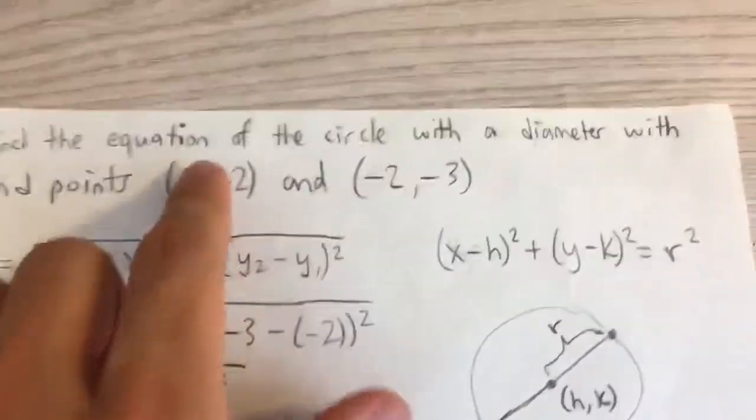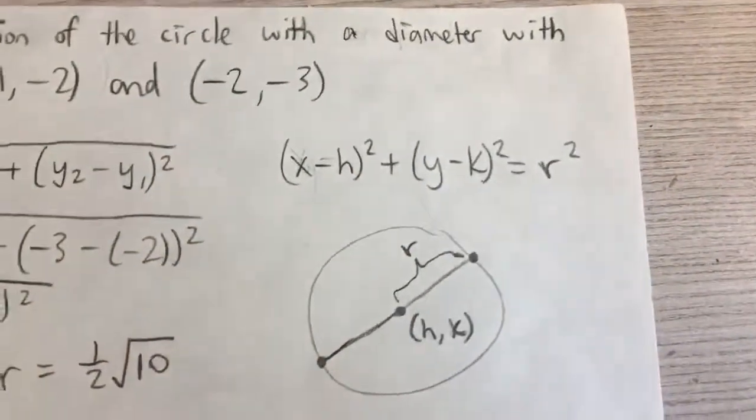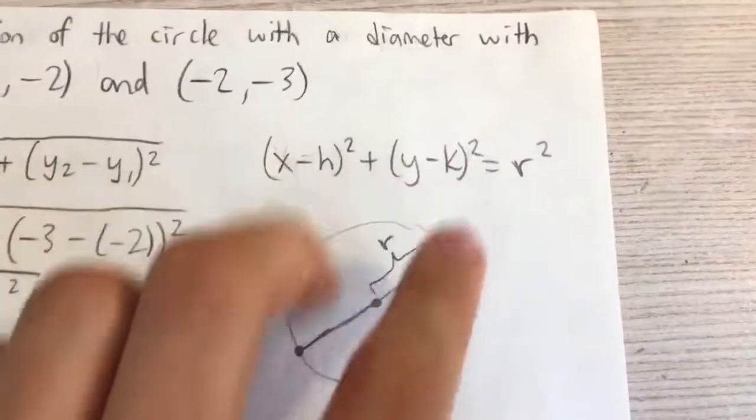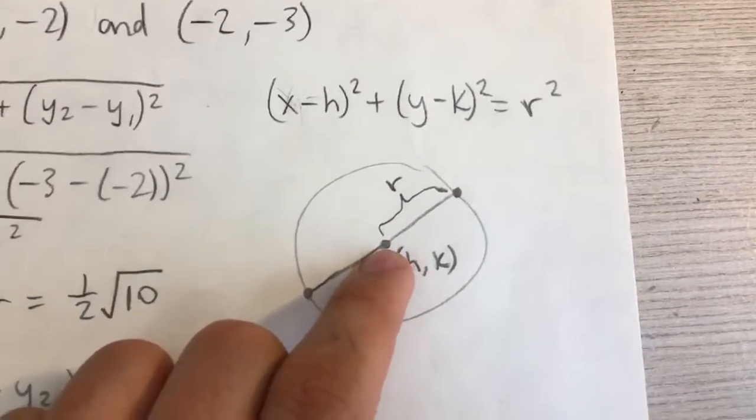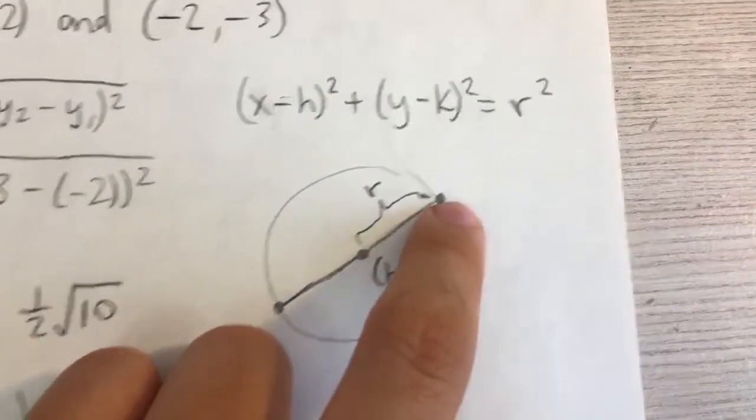The general form for the equation of a circle is (x - h)² + (y - k)² = r², where h and k represent the coordinates of the center of the circle, and r represents the radius of the circle from the center to the outside.